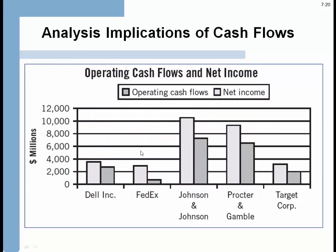Here's an interesting look: in all these cases, net income for these companies outpaced operating cash flows. These businesses are probably growing — they're adding more receivables and more inventory, and it's not offset by the amount of payables they have.